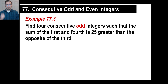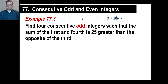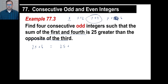Try one more. Find 4 consecutive odd integers: x, x plus 2, x plus 4, and x plus 6. The sum of the first and the fourth is x plus (x plus 6), which is 2x plus 6. It's 25 greater, so we add 25 to the right side. The opposite of the third: the opposite of (x plus 4) is negative x minus 4. So we have 2x plus 6 equals 25 plus negative x minus 4.